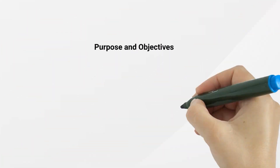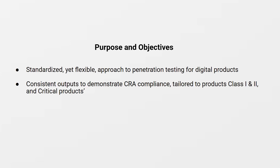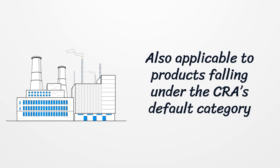In this section, we'll cover the core purpose and objectives of the methodology. This methodology offers a standardized, yet flexible, approach to penetration testing for digital products. It ensures consistent outputs that manufacturers can use to demonstrate CRA compliance. It's tailored for important class 1, class 2, and critical products. It is also applicable to products falling under the CRA's default category, but for default category products, testing may be performed with reduced frequency or scope, reflecting their generally lower risk profile and less critical usage contexts.